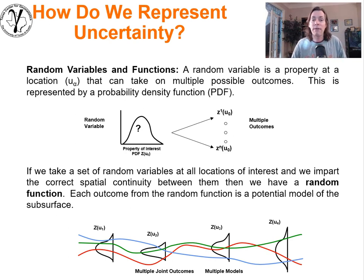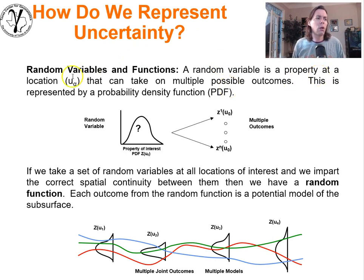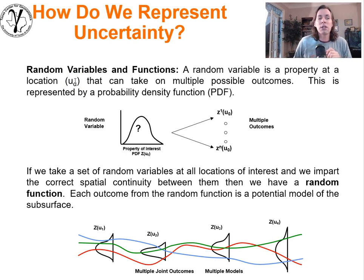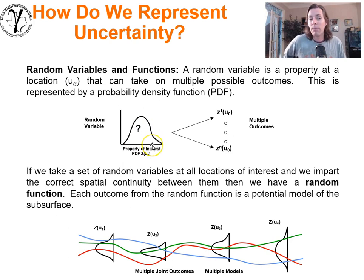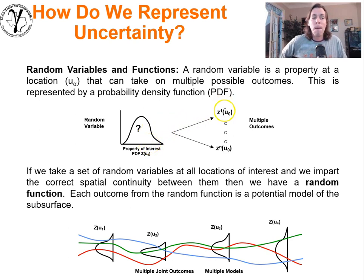The concepts are actually quite straightforward — might sound a little complicated, but let's make it very practical. A random variable is simply a property at a location — recall u-alpha would just be a location vector going to a location in the subsurface — that can take on multiple possible outcomes. We represent this with a probability density function. At a specific location in space, we have a PDF representing the range of possible values and their associated densities or interval probabilities. From that distribution we could sample multiple possible outcomes, which we would call local realizations.